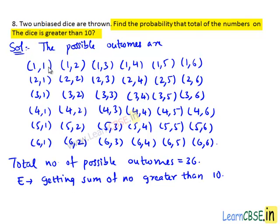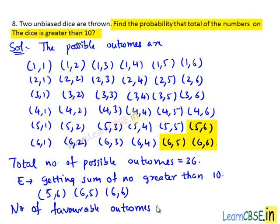Here the sum is 1 plus 1 which is equal to 2, that is less than 10. Here 1 plus 2 equals 3, which is less than 10. But we need the sum greater than 10. Then the possible cases are (5,6), (6,5) and (6,6).